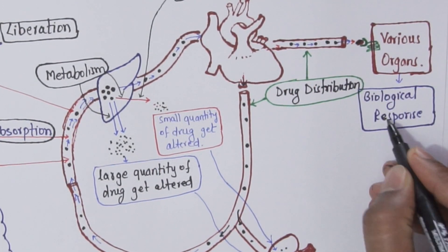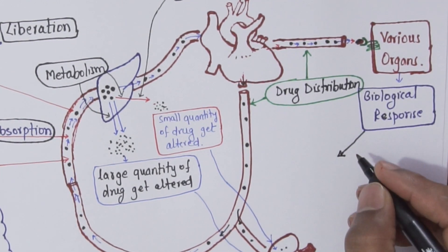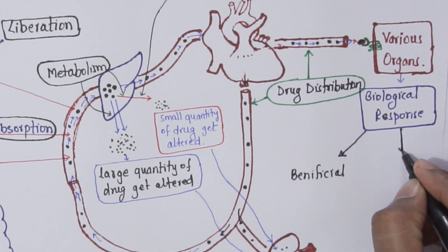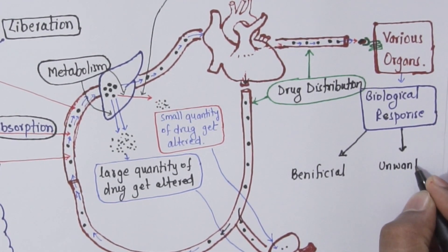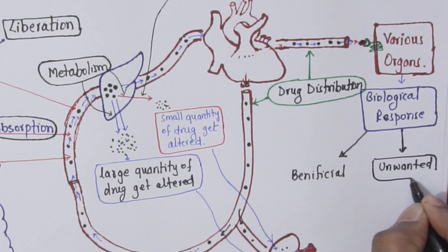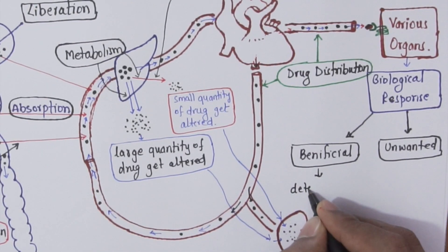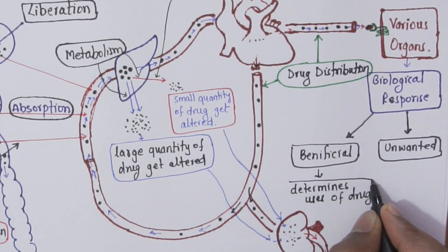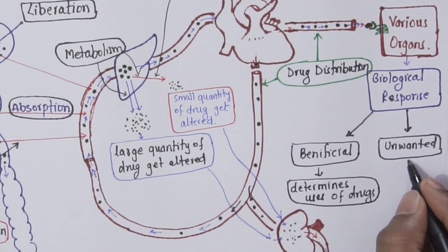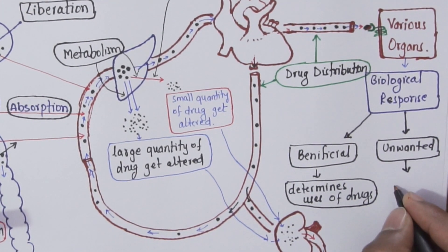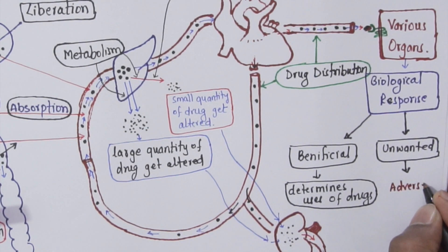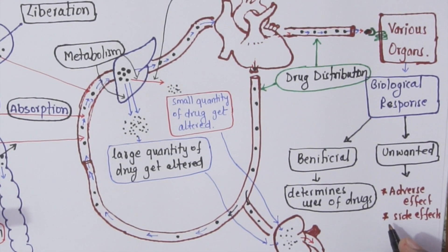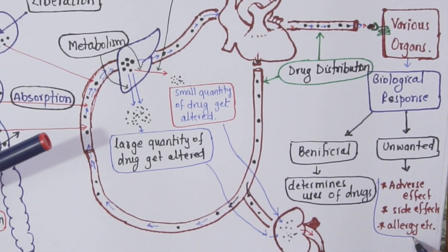Once the drug will reach to various organs, it will interact with various receptors present on the cell and produces biological effect which may be beneficial or unwanted. So this beneficial effect will determine the usage of the drug, whereas the unwanted effect of drug will determine adverse reaction or side effects or allergy.